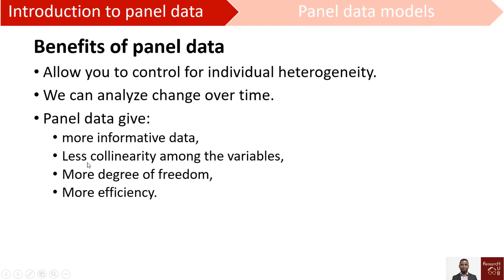Because we have more information from multiple individuals or companies, the collinearity problem is less severe in panel data. We also have more degrees of freedom because of the additional information, compared to pure cross-sectional data. There is also more efficiency, in the sense that we use more information to model the companies we are studying — we have more information both within and across companies.